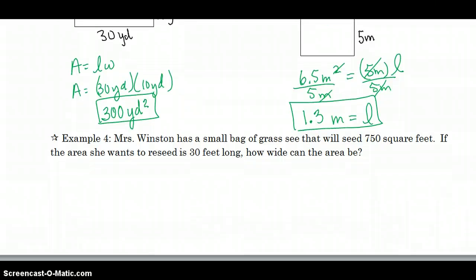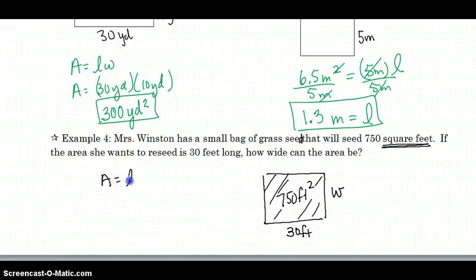Mrs. Winston has a small bag of grass seed that will seed 750 square feet. So the area is 750 square feet. That's the area that she needs to seed with grass. If the area she wants to reseed is 30 feet long, so our length is 30 feet, how wide can the area be? So when it says square feet, you know that's your total area. Area equals length times width, 750 equals 30 times W, divide by 30. And I know I didn't put my feet, but I'll take care of it at the end. 3 goes into 75, 25 times, and it's feet, our unit of measure.